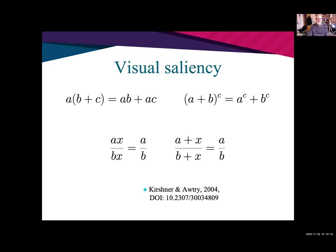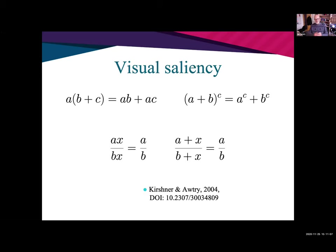Visual saliency comes from a really nice paper by Kershner and Autry — a really clever design. The idea is that mathematical notation has evolved in such a way to be helpful a lot of the time. But overgeneralization, which permeates a lot of these common errors, can lead to problems — as shown in examples from the paper. Sometimes in maths the notation is intuitive, there's a visual resemblance — 'saliency' as they call it — but at other times it can be unhelpful or overgeneralized.